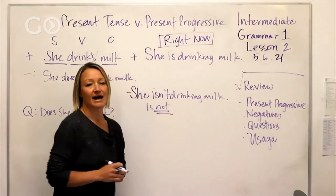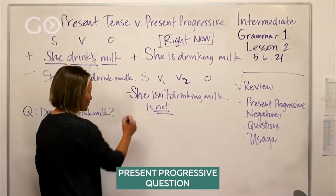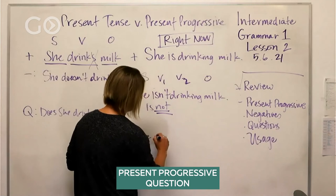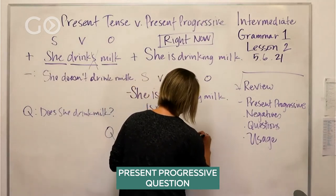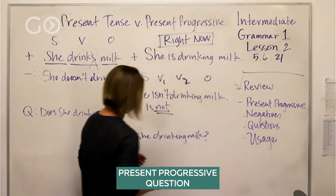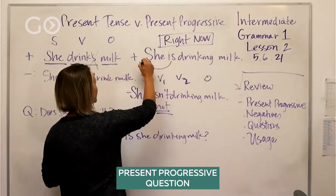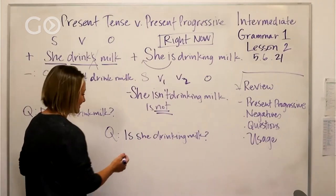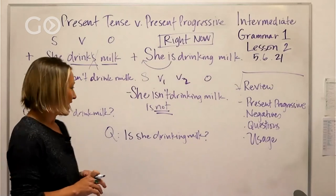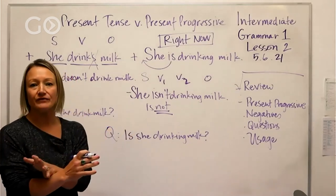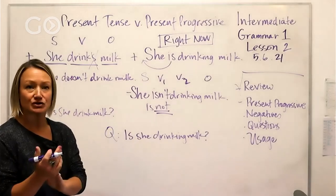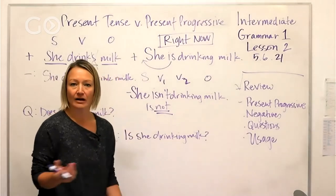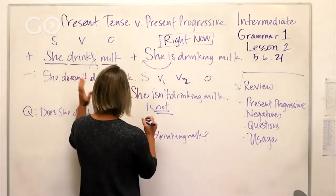Now let's change this to a question. 'Is she drinking milk?' What happened? We took 'is' and moved it to the front — that's the inversion. Everything else stays the same; we just swap those two words and exchange their places. So: 'Is she drinking milk?'